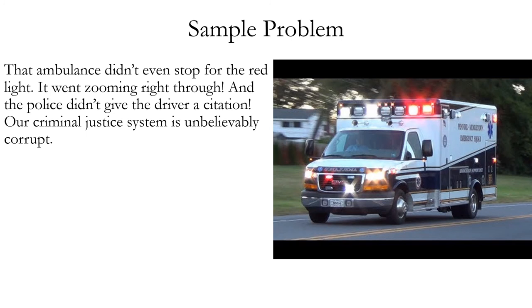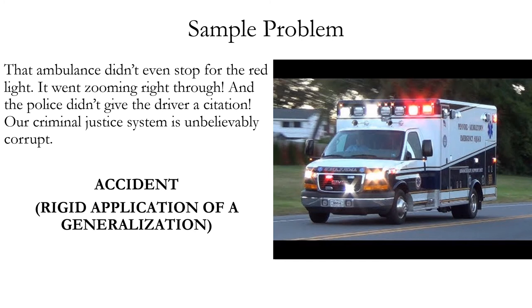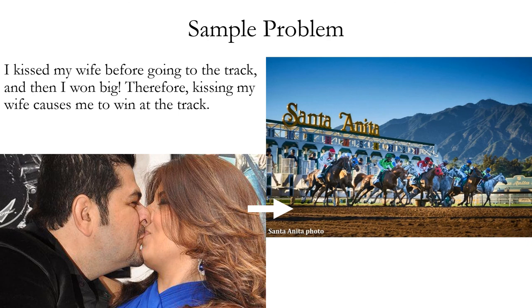Now let's identify fallacies in sample problems. First: that ambulance didn't stop for the red light — it went zooming right through — and the police didn't give the driver a citation. Our criminal justice system is unbelievably corrupt. This is the fallacy of accident, or rigid application of a generalization. Even though in general it's a valid rule to cite a driver for speeding, this doesn't apply to ambulances or other emergency vehicles. Second: I kissed my wife before going to the track and then I won big; therefore, kissing my wife causes me to win at the track. This is a post hoc fallacy — just because the kissing happened before the winning does not prove it caused the winning; it may have been a coincidence.